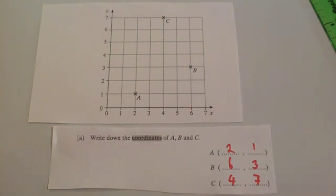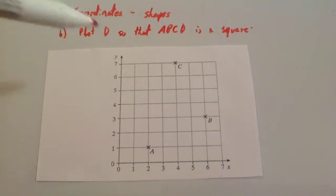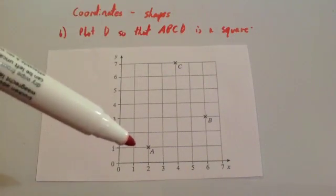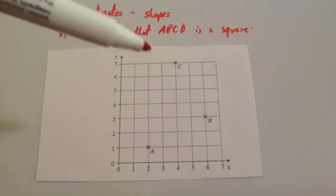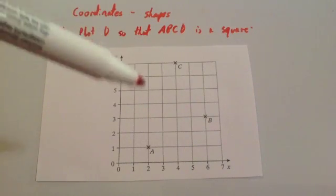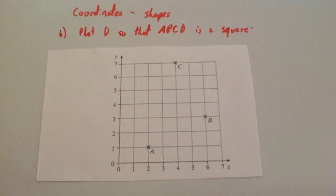The second part of the question says, plot D so that ABCD is a square. So we've got A, B, C, and we need D. Now looking at it, D is going to have to be over here somewhere. And let's just see where it's going to have to be.